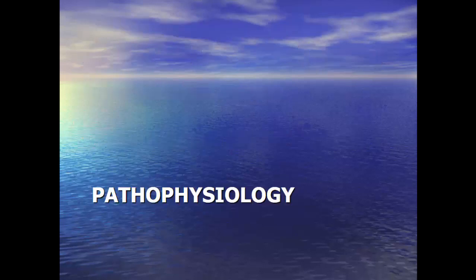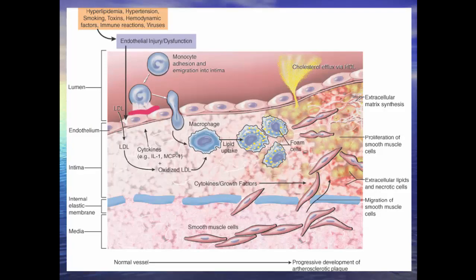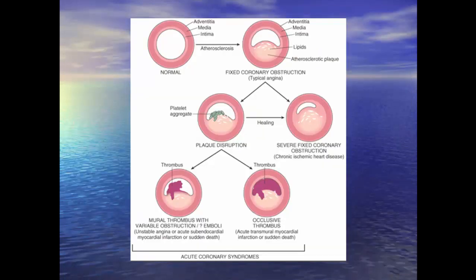First, a brief word on the pathophysiology of atheromatous coronary disease. Coronary narrowings arise due to the buildup of atheromatous plaque within the wall of the coronary artery. The initial lesion is possibly damage to the endothelium that allows LDL lipoproteins to leak into the wall. These attract macrophages that gobble up the fatty material, macrophages form foam cells, they secrete various chemicals that attract smooth muscle cells, and you end up with a great big mess of cells and material within the wall of the artery.